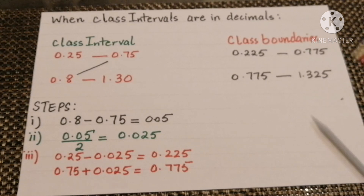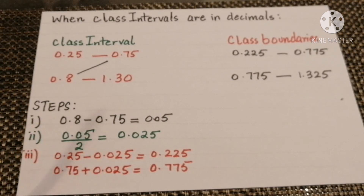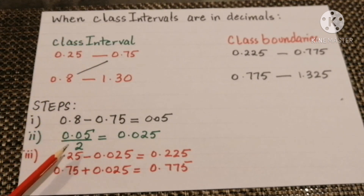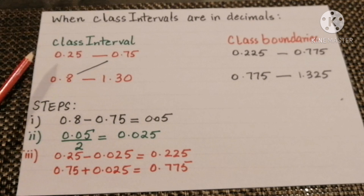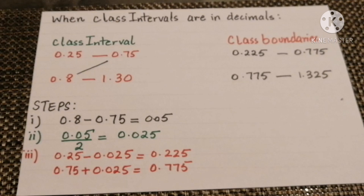In this way we have converted the class intervals into class boundaries by following these steps: subtract the upper class limit of one interval from the lower class limit of the next, divide by two, then subtract that value from the lower class limits and add it to the upper class limits. Hope you have understood the concept. Thank you.